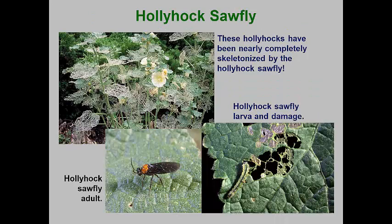Damage by the hollyhock sawfly is often mistaken as being done by Japanese beetle adults because of the crude skeletonization that is so similar. However, hollyhock leaves are poisonous to Japanese beetle adults, though the beetles can feed on the flowers. This little sawfly has males that are orange and black while the females are solid black. The little larvae are speckled and usually feed from leaf undersurfaces. There can be up to three generations per summer, but if the first generation is controlled, the following generations rarely cause much damage.